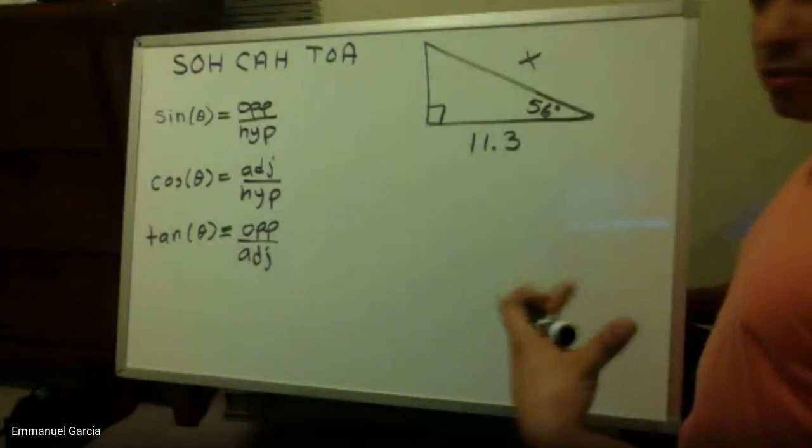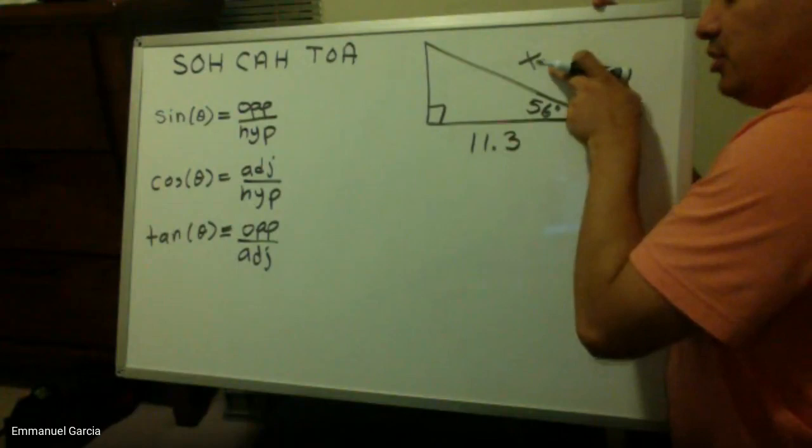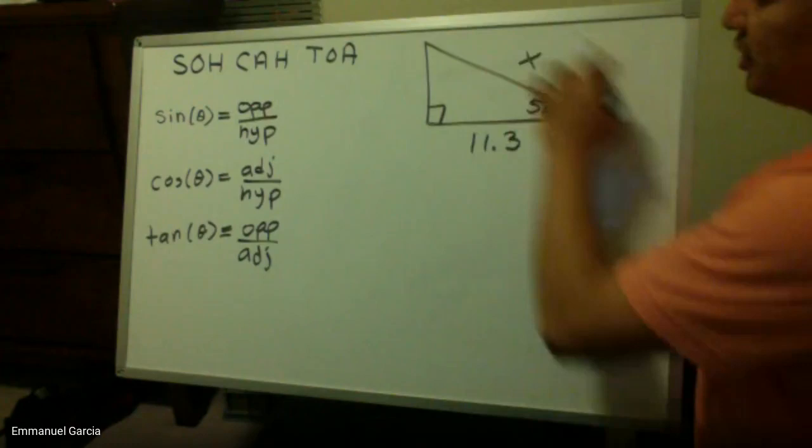So one more example with tutorial so you can practice before you do your assignment. Here we want to find the length of this right triangle. We are given this angle and we are given this side.